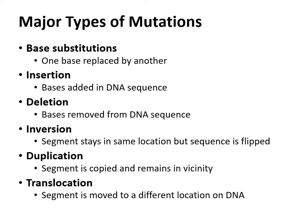Inversion means that the segment of DNA has stayed in the same location but has flipped — if it was C, A, T, now it's T, A, C. Duplication is exactly what it sounds like: you end up with multiple copies of the same piece of DNA, which can be good if it produces a valuable protein you want more of, but sometimes bad if you don't want a lot of something. Translocation means a piece of the sequence has moved to a different location in the DNA. We're going to focus on base substitutions, insertions, and deletions.